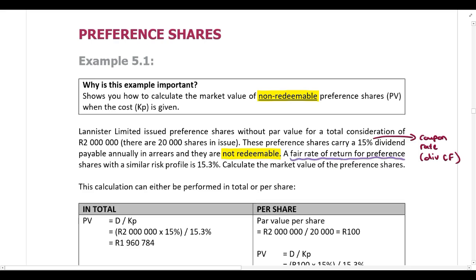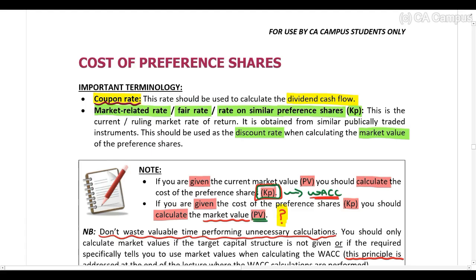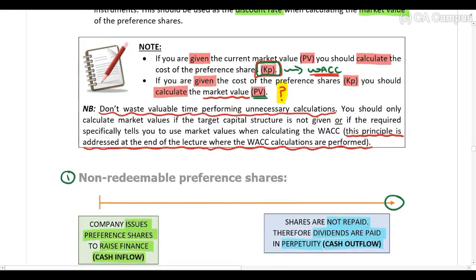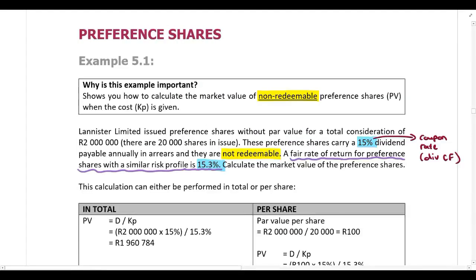A fair rate of return for preference shares with a similar risk profile is 15.3%. You've been given two different rates in the question, so you need to know what's what. We use the coupon rate to calculate the dividend cash flow — the dividend the company will pay every year. We use the market-related rate, the fair rate, or the rate on similar preference shares as our discount rate when calculating the market value. So 15.3% is the cost of the preference share.